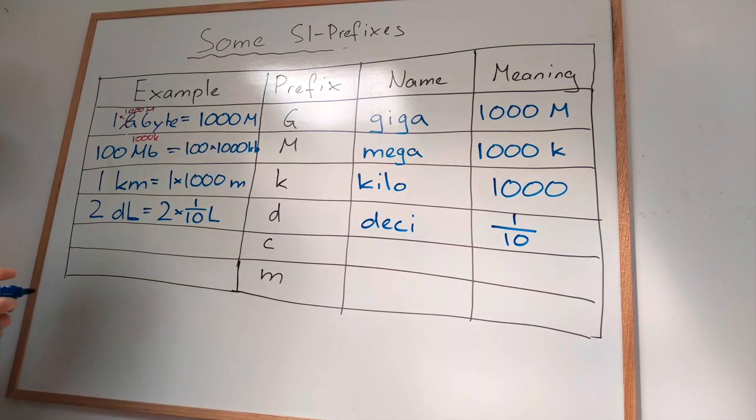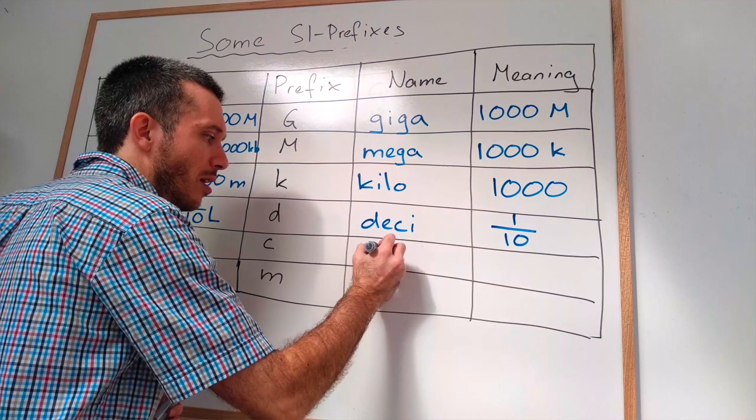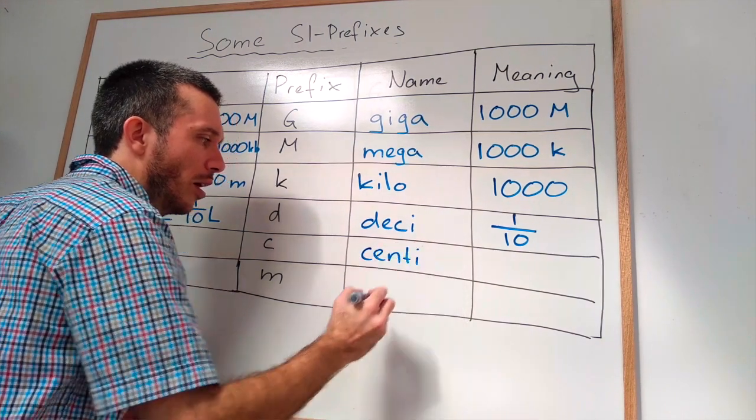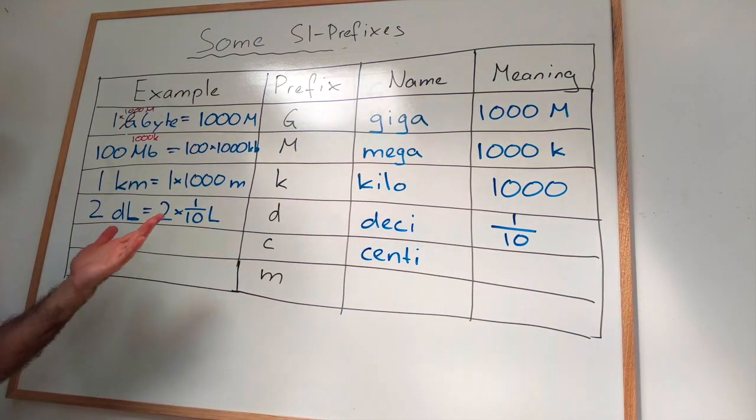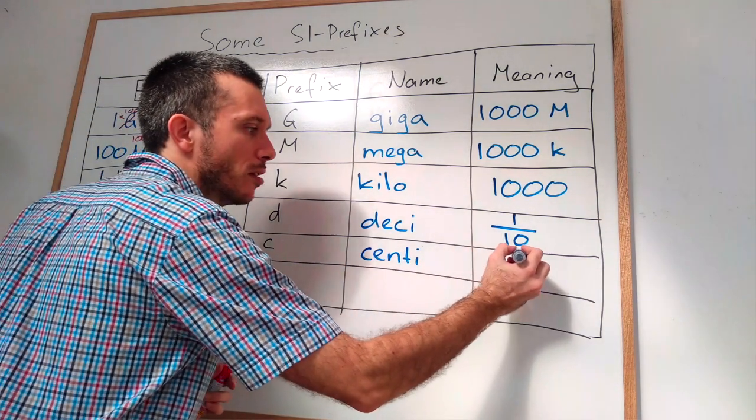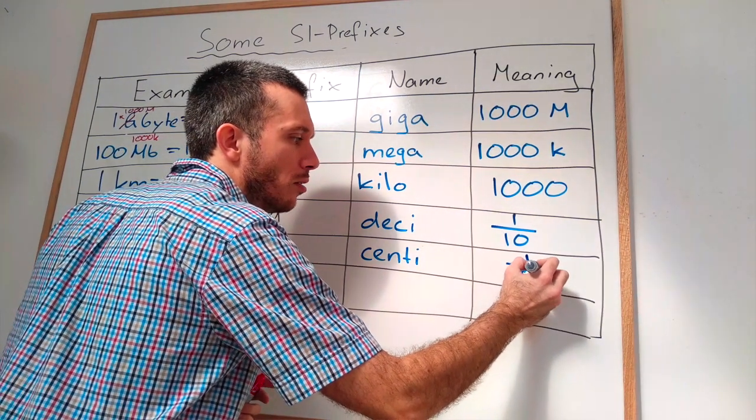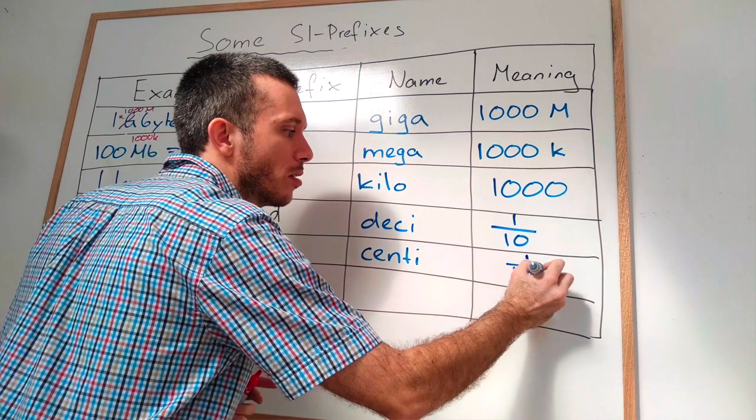Next one, the C stands for centi. Again, French helps. The number is cent. So this is one over 100. Cent is 100.